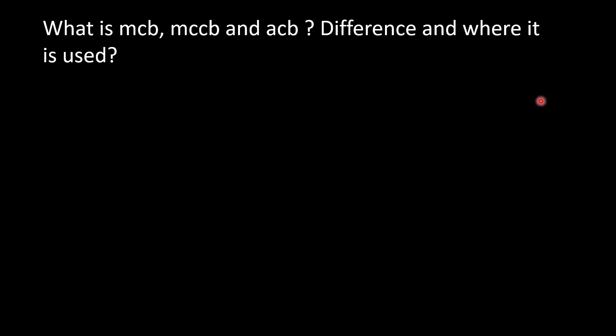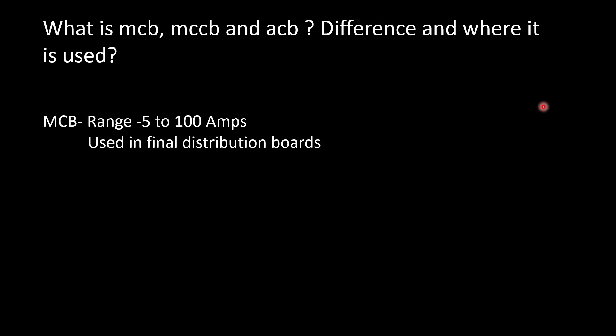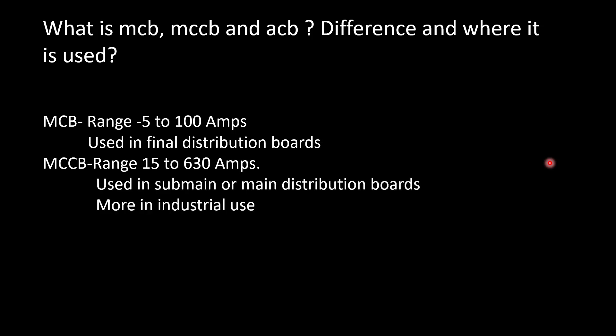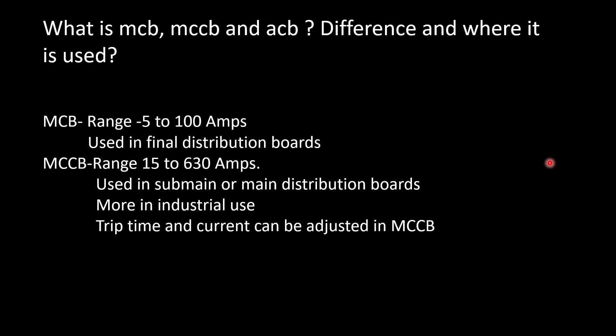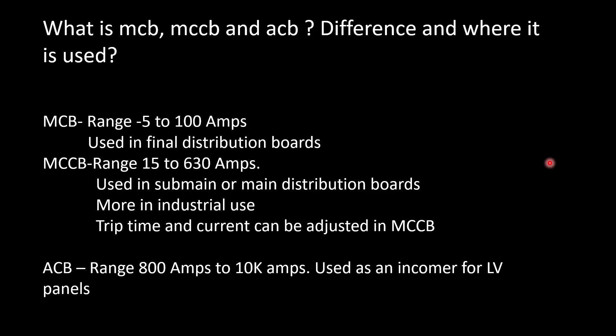What is MCB, MCCB, and ACB? What is the difference between them and where is each used? I have covered this subject in a detailed video — I will provide the link in the description box. MCB — full form is Miniature Circuit Breaker. It ranges between 5 to 100 amps and is used in the final distribution board or the distribution board inside villas and apartments. MCCB — Molded Case Circuit Breaker — ranges between 15 to 630 amps. It is used in sub-main distribution boards and is more common in industrial use. The key difference: in MCCB, the trip time and current can be adjusted; in MCB, it is not possible. ACB — Air Circuit Breaker — ranges between 800 amps to 10,000 amps and is used as an incomer for LV panels. Air is used to quench the arc produced due to ionization.